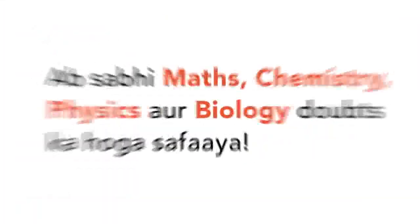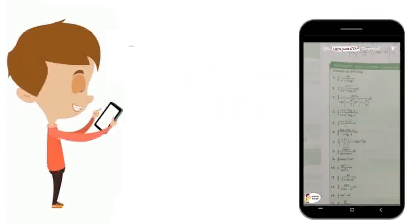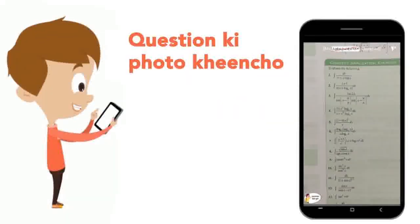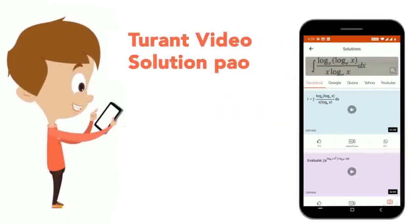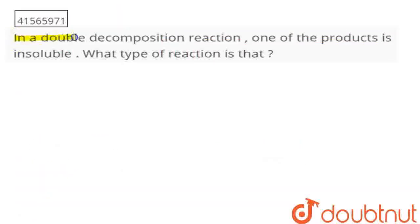Today download the Doubtnut app. Doubtnut will solve all of your maths, chemistry, physics and biology doubts. Just take a photo of your question, crop it and get a video solution directly. Download now! The question is: in a double decomposition reaction, one of the products is insoluble. So what type of reaction is this?